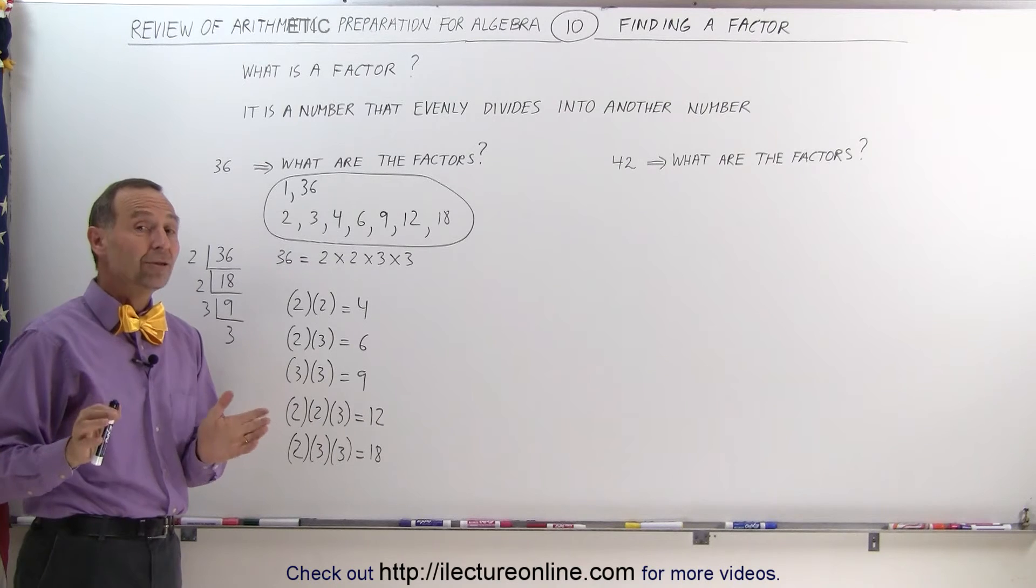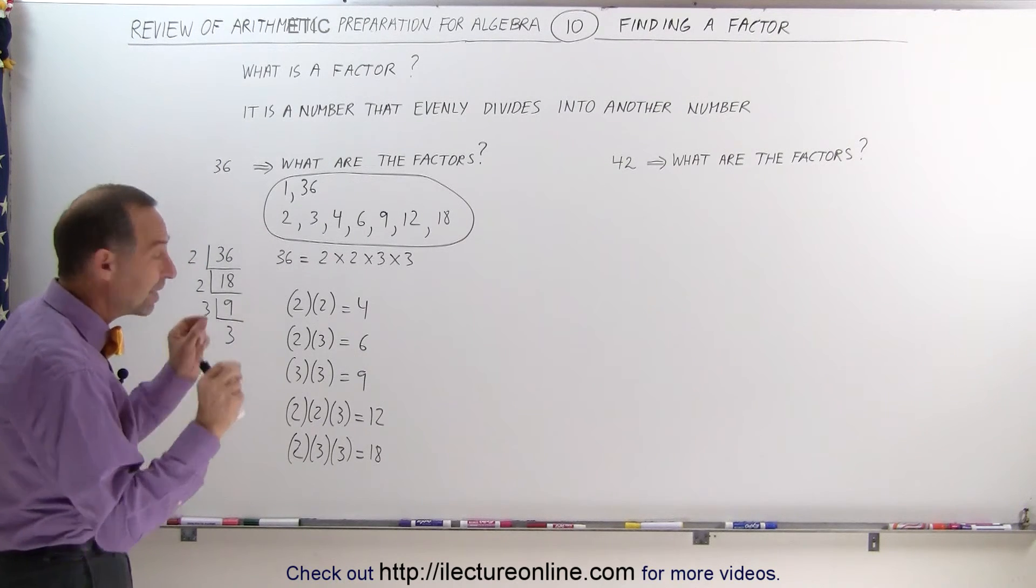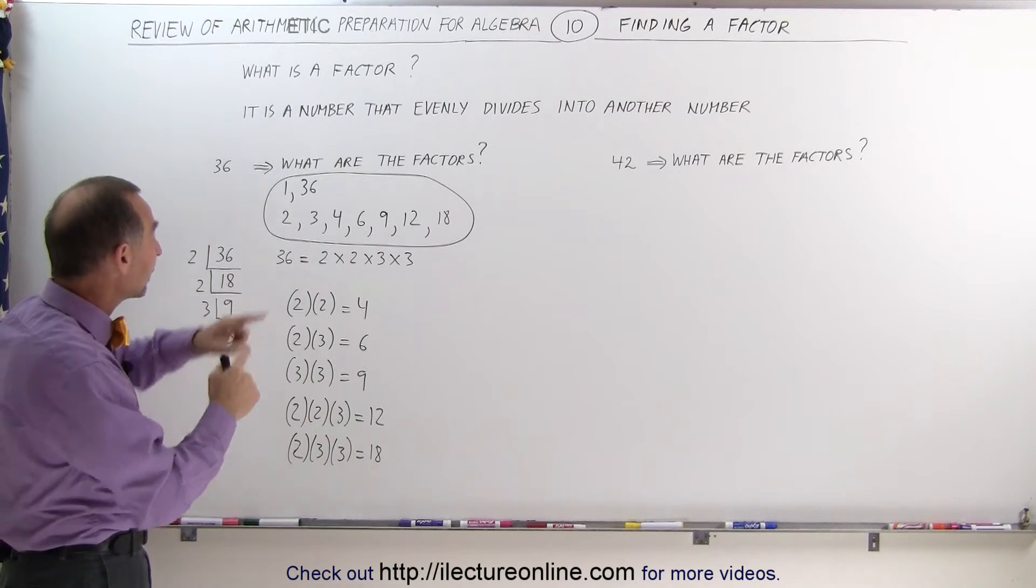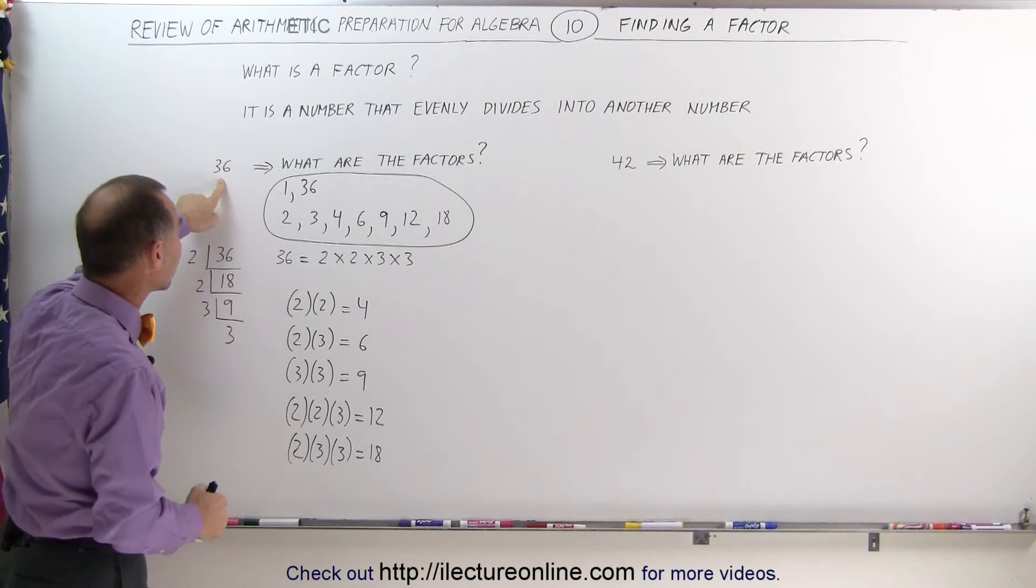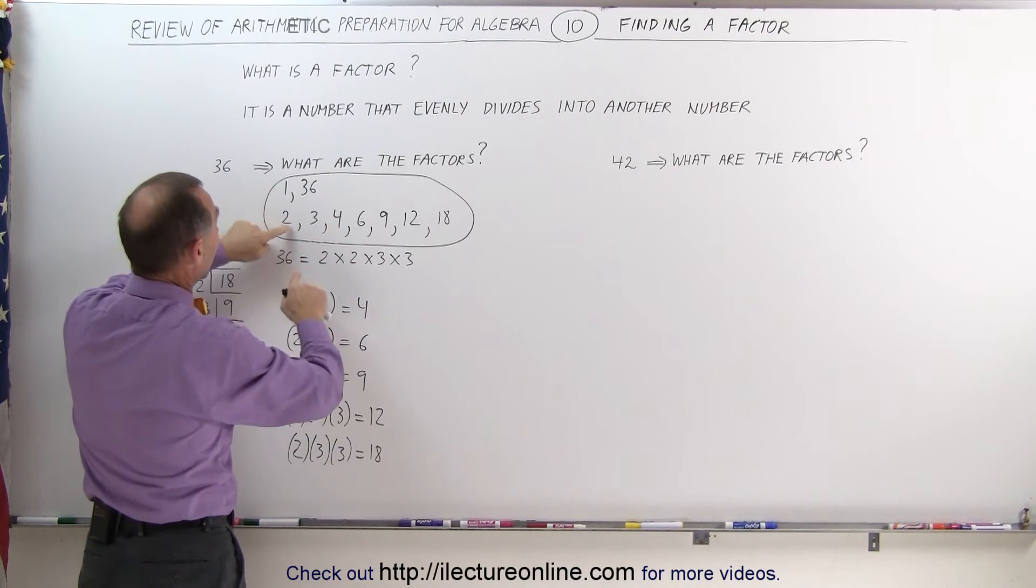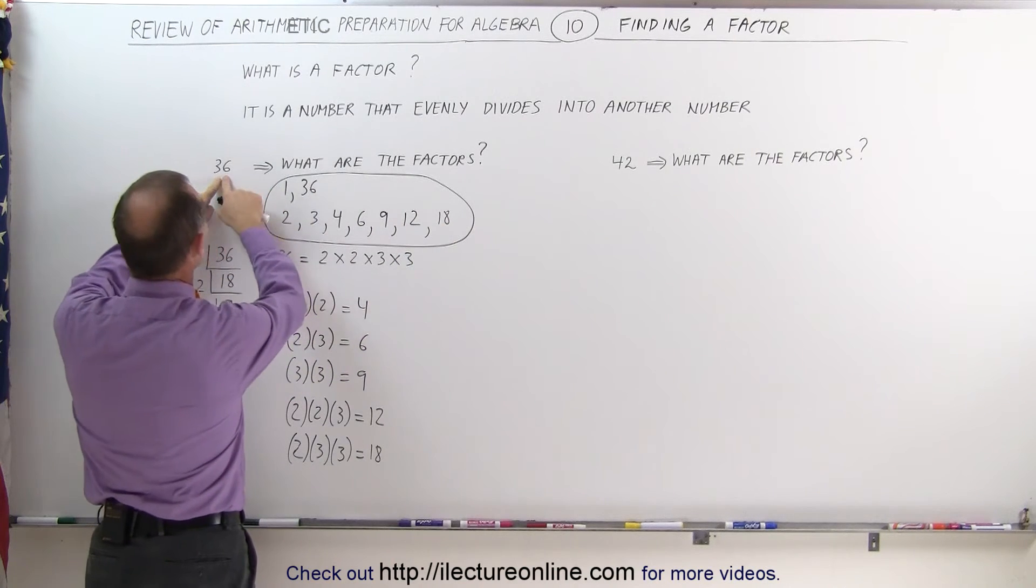Now, a good way to see if you have found all of the factors is to take the outer two numbers, the smallest and largest, and multiply them together to see if you get 36. Which means 1 times 36 gives you 36. How about 2 and 18? Multiply those two together, 2 times 18, that gives you 36.